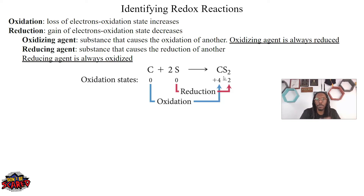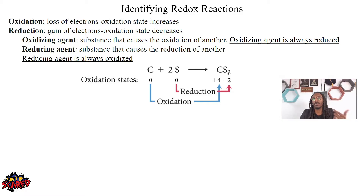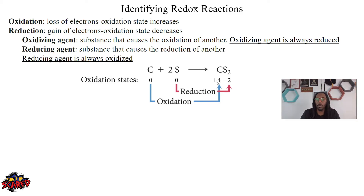When it comes to the compound, we identify the oxidation states for both carbon and sulfur. Sulfur is in the same group as oxygen, so its oxidation state is going to be minus two. We have two sulfurs. Carbon needs to balance this out because it's a neutral molecule, so carbon has to be plus four — four plus negative four in total gives a neutral molecule of zero.